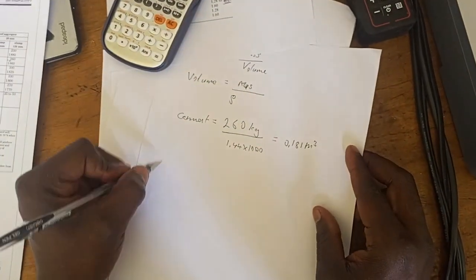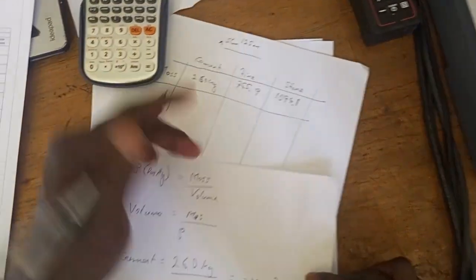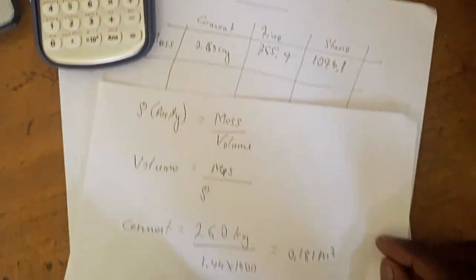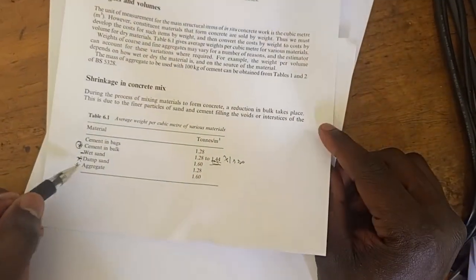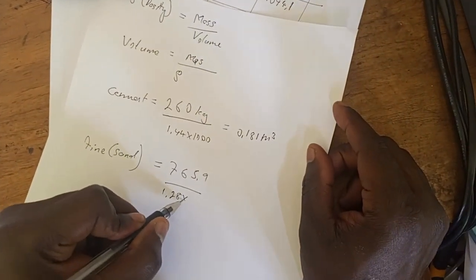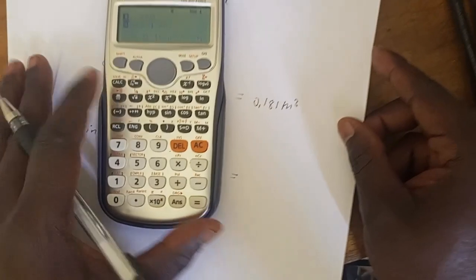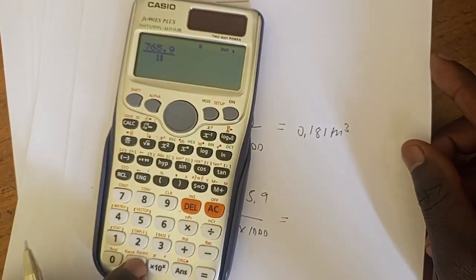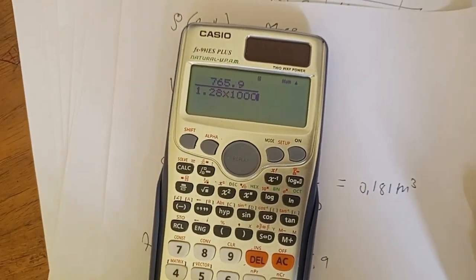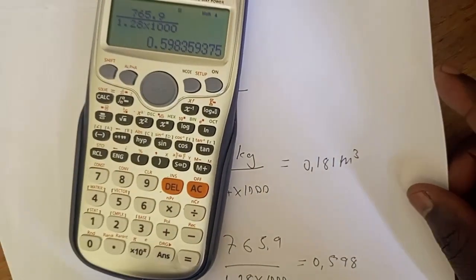After cement, we've got the fine aggregates, that is your sand, which is equal to, what is the mass? We've got 765.9 divided by the density of sand. We are going to use the dry one, which is 1.28. It's going to be 1.28 multiplied by 1,000, which is going to give us the volume of sand. We have 765.9 divided by 1.28 multiplied by 1,000. We get 0.598 cubic meters.